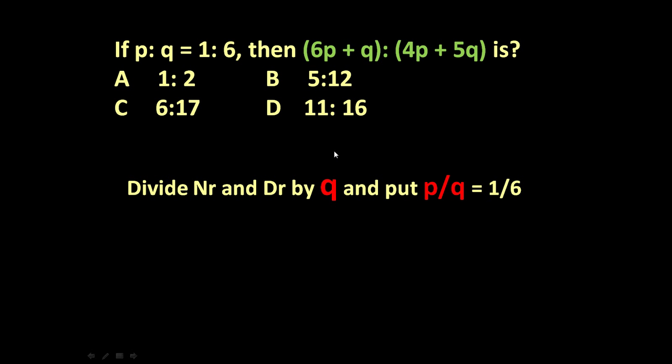So that everywhere it becomes p/q, because here 6p + q is there, here 4p + 5q is there. If we divide it by q, we will get p/q, and we know p/q = 1/6. It is given, so just how it is to be done, let us see.